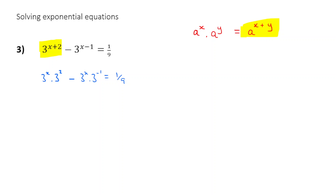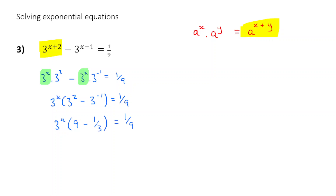And then having done that, you can see we should be able to factorize out the 3 to the power of x. So I take out 3 to the power of x, and what I'm left with is 3 squared minus 3 to the power of negative 1, which is equal to 1 divided by 9. Now, 3 squared is 9, and 3 to the power of negative 1 is 1 upon 3. So I end up with 3 to the power of x times bracket 9 minus a third. I could write that as 27 thirds minus a third, and 27 thirds minus a third is just equal to 26 thirds. So I get 26 thirds here is equal to 1 over 9.